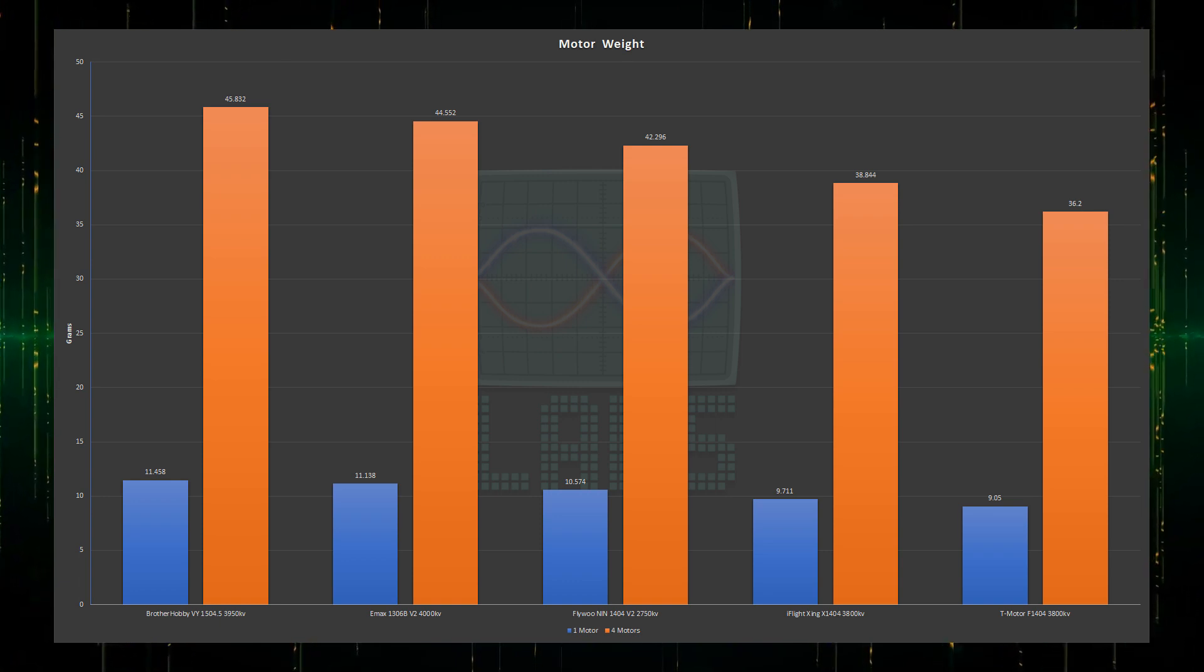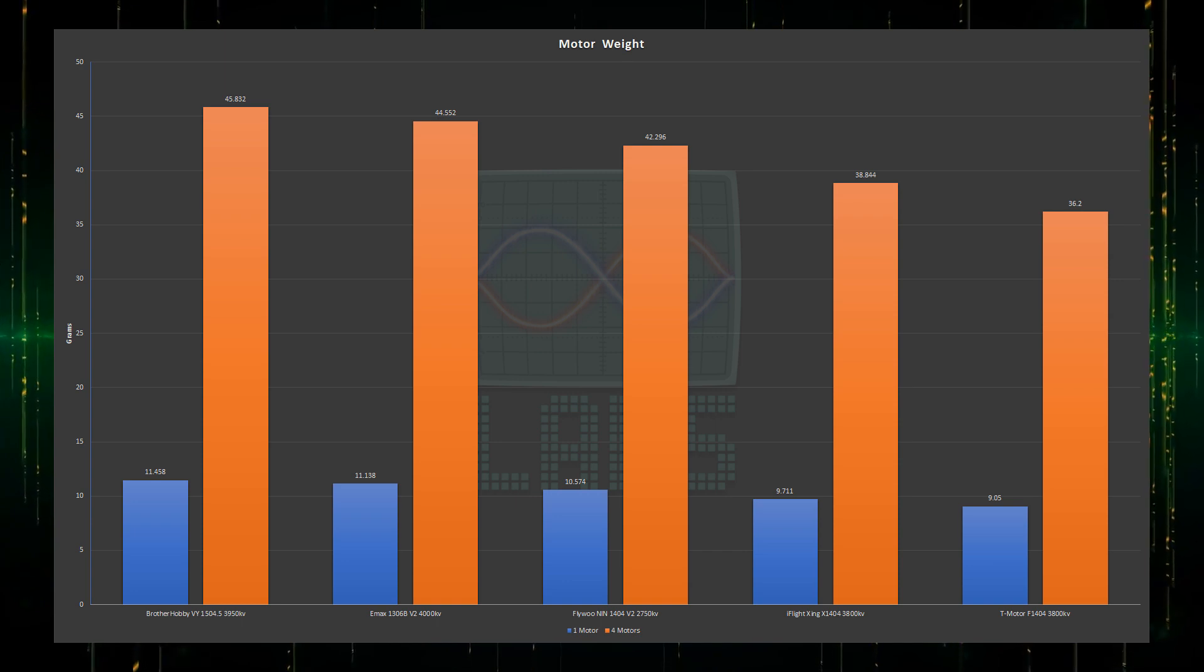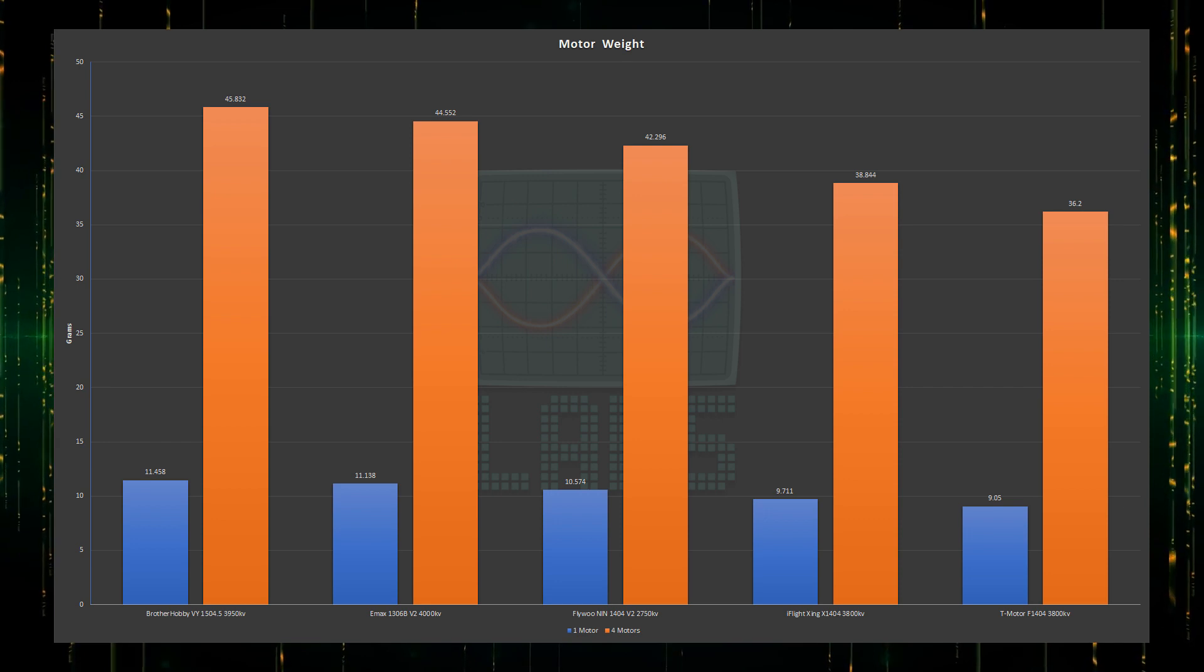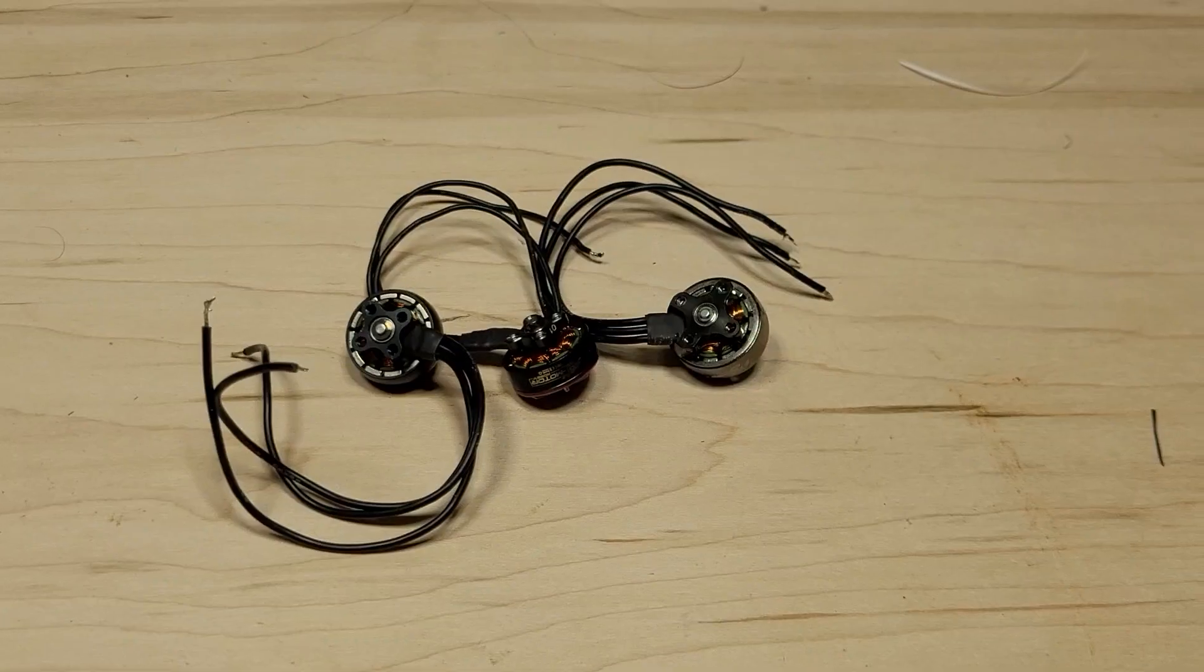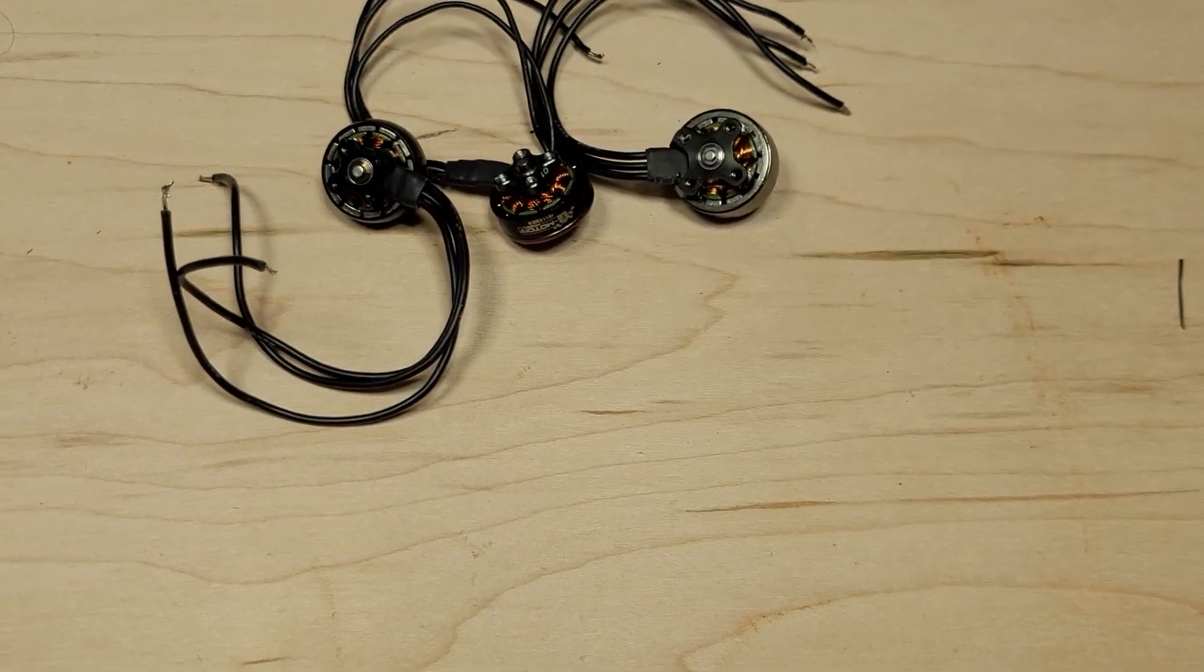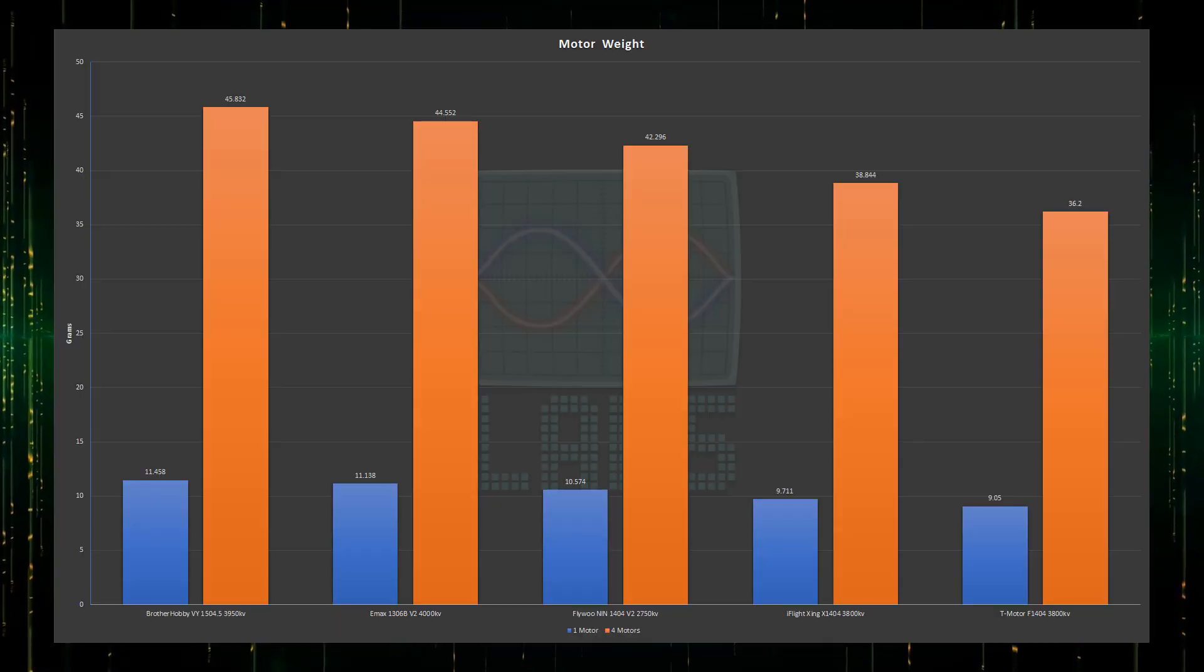The T-Motor is an impressive lightweight, only coming at 36.2 grams, which is 6 grams lighter than the Flywoo. The iFlight weight is in the middle of the two, and is 2.6 grams per quadcopter heavier than the T-Motor. One difference is that the T-Motor and iFlight motors have a smaller base than the Flywoo, which clearly saves weight. With the weigh-in complete, we can now start testing.